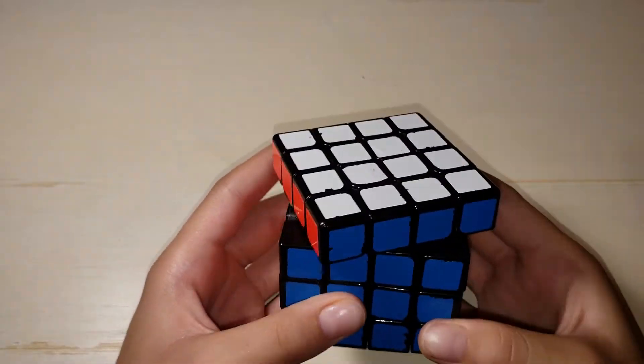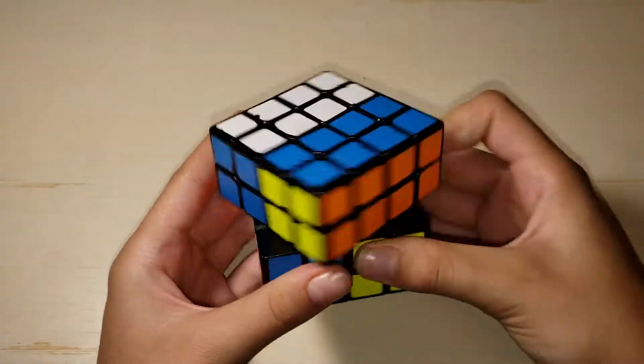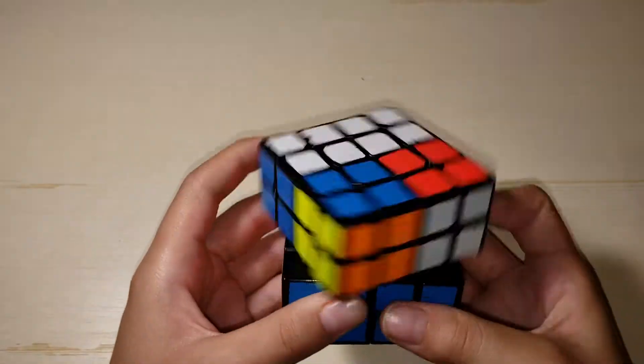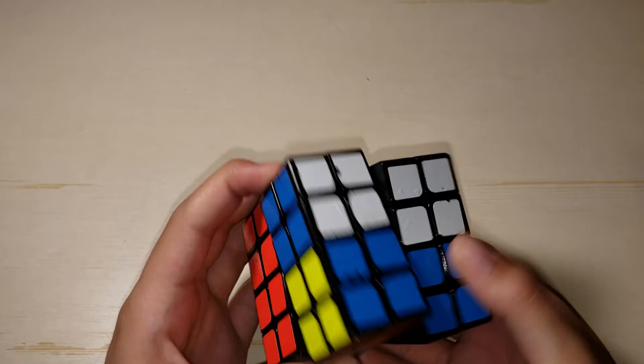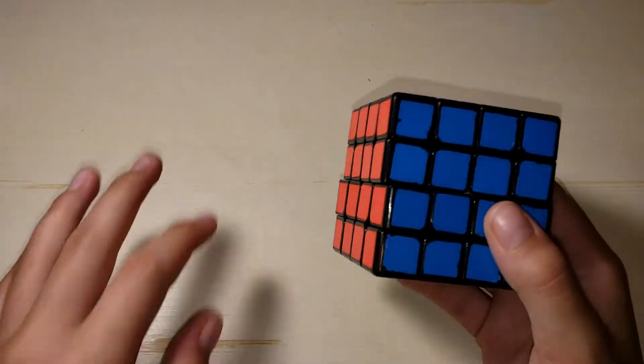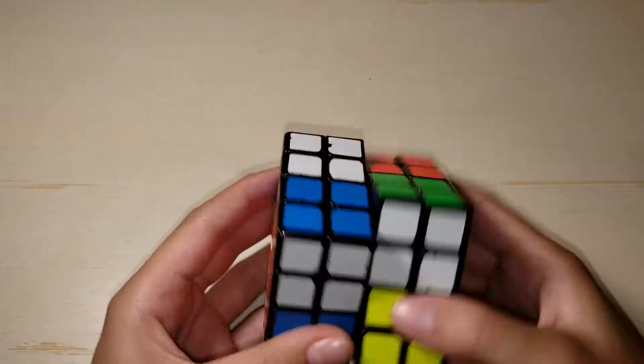So, for this cube I kind of failed last comp. I got like a 1 minute average, because I like DNF'd. It was terrible. But hopefully I can get sub 54 average, maybe. I don't want to set the bar too high. Because I don't want to screw up my average again.